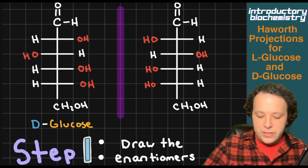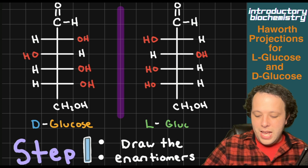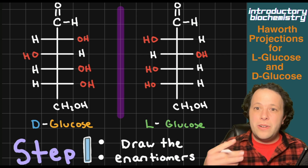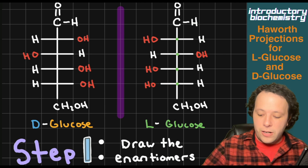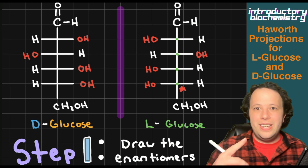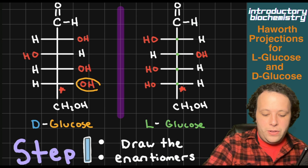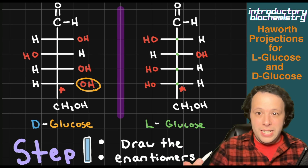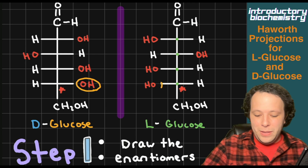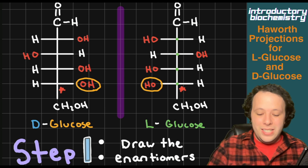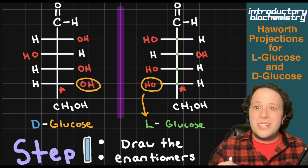Now what exactly does that mean? On the right side, I now have L glucose for the other structure. How can you tell if it's L or D? The way to remember is it has to do with the last chiral carbon. Each one of these carbons is chiral, and we're going to look at the last one in the line — the one with the little red star. On the left structure, the OH is on the right side, so that's D — D for Dexter, meaning right. On the bottom one, we have L, which is on the left. So D and L. Let's go on to the next step.